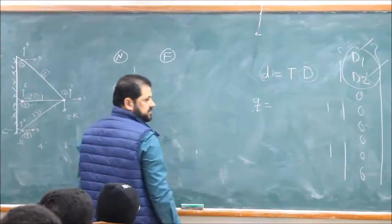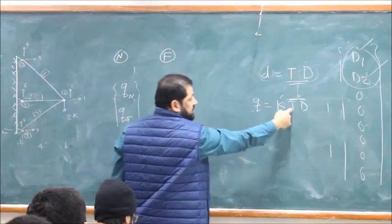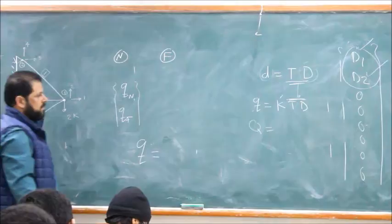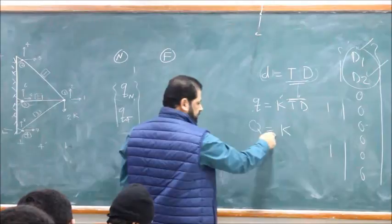We have Q equals K' times T times D, which we can write as Q = K'·T·D. This is K' times D in local coordinates for the member. So for each member, Q (the local member force vector) equals K' times the local displacement, where the local displacement comes from the transformation T applied to the global D.